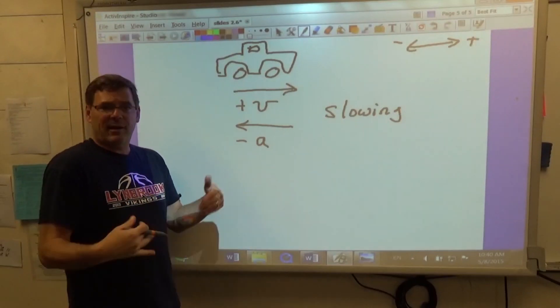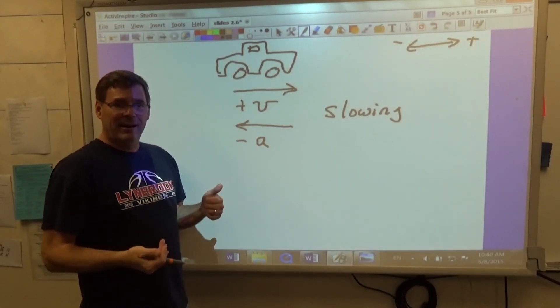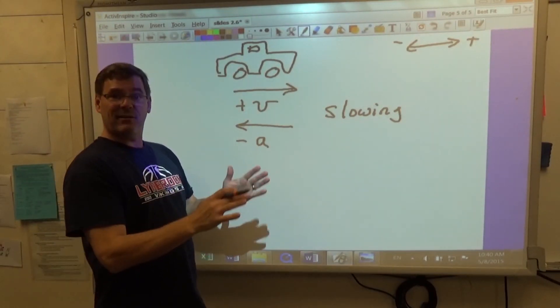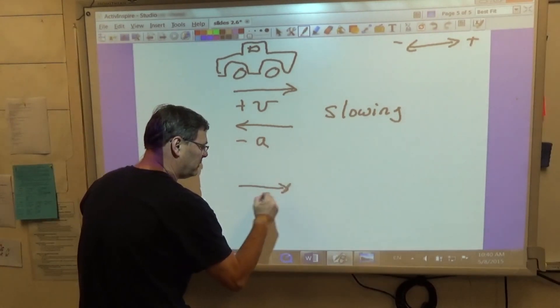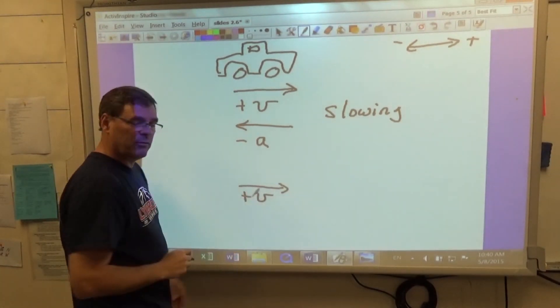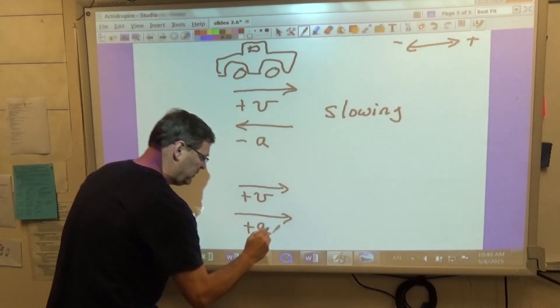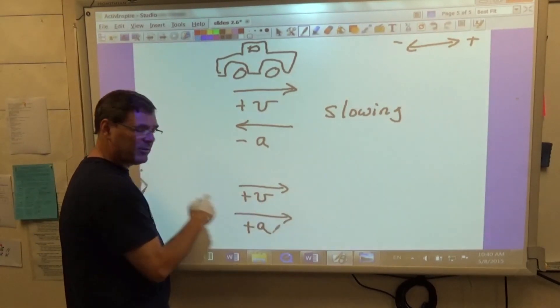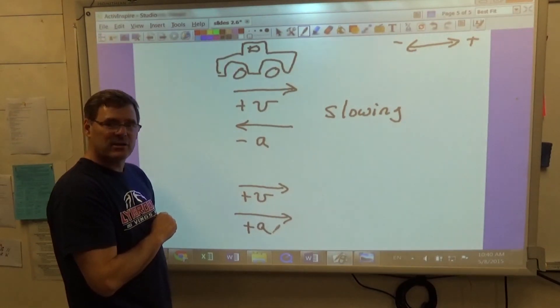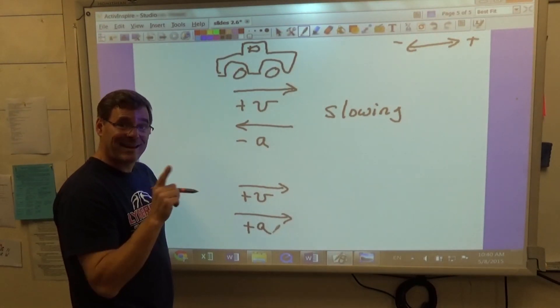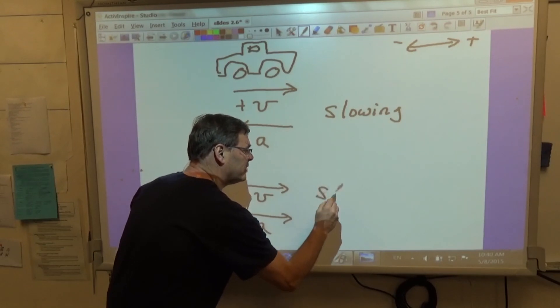He stops at a stop sign, a traffic light, whatever, then he accelerates with the accelerator, pushes on the gas pedal, he starts to move forward. So he has positive velocity, and he's accelerating forward. So both velocity and the acceleration are positive. They are the same sign. So he's speeding up.